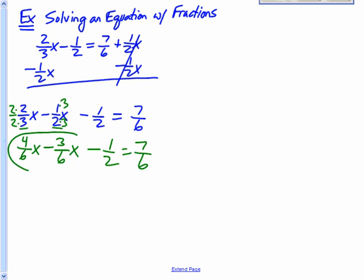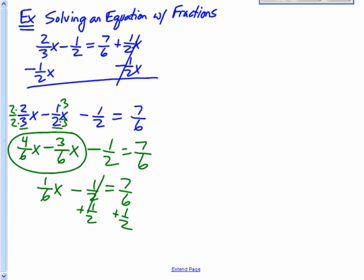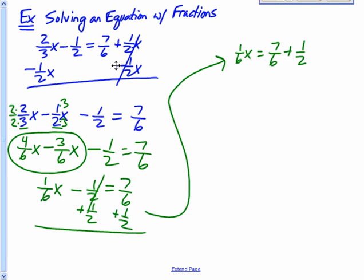Still got this minus half equals 7 sixths. Well, 4 sixths minus 3 sixths, 4 minus 3 is 1 sixth x. Add the 1 half, add the 1 half. So I've got 1 sixths x equals 7 sixths plus a half. Well, we've got to get a common denominator of a 6 here. So 7 sixths plus 3 sixths, 10 sixths. So 1 sixths x equals 10 sixths.